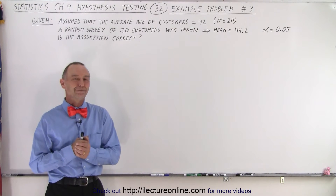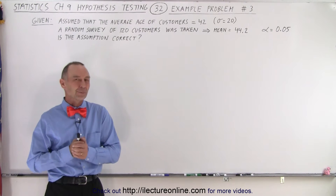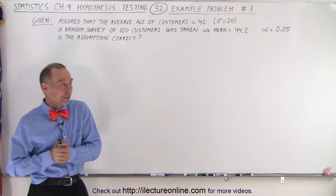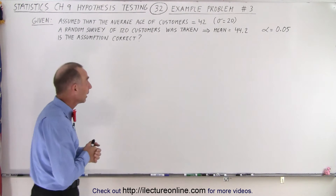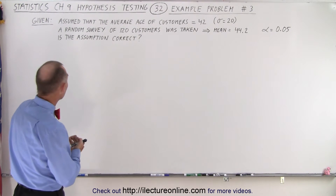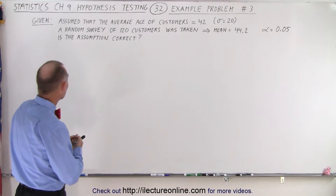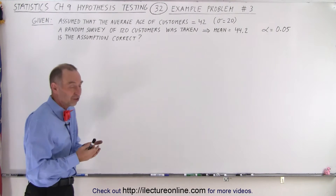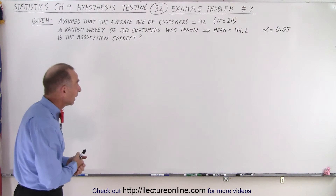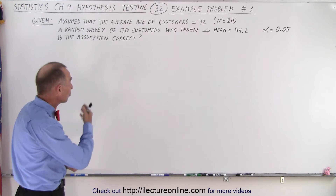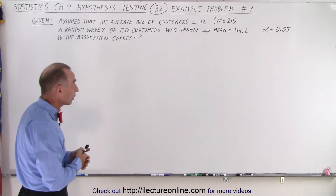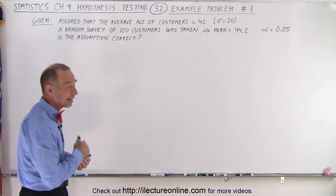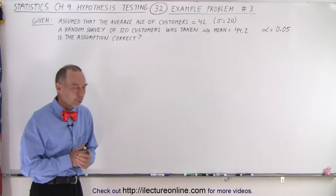Welcome to iLecterOnline. Here's another problem where we can see if we understand what we've learned in this chapter. The example problem states that there's an assumption that the average age of the customers — let's say we're dealing with a bank — and they assume that the average age of the customers in the bank are 42 years of age with a standard deviation of 20.